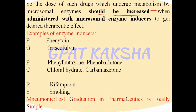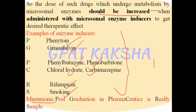Further examples of enzyme inducers are phenylbutazone, phenobarbitone, chloral hydrate, carbamazepine, rifampicin, and smoking. You can remember these using the mnemonic: 'Post Graduation In Pharmaceutics is Really Simple.' Whenever these drugs are given along with another drug that is a substrate of microsomal enzymes, the dose of that substrate drug should be increased to produce the desired therapeutic response.